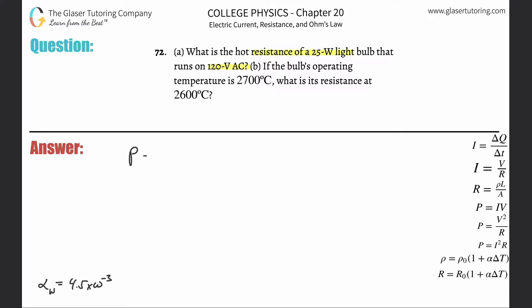So basically they gave us the power, that's going to be equal to 25 watts. They gave us the voltage, that's going to be equal to 120 volts. And they're asking us for the resistance.